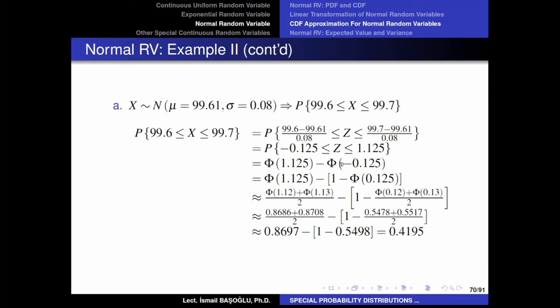This becomes the difference of the CDF of the standard normal at 1.125 minus the CDF at -0.125. For the negative CDF, due to symmetry, it equals 1 minus the CDF at the positive counterpart. After applying linear approximation to each CDF value, the approximate probability is 0.4195.